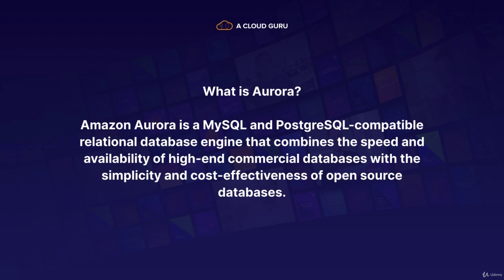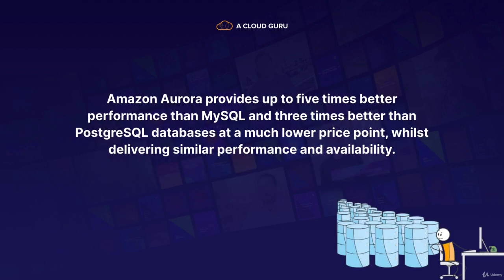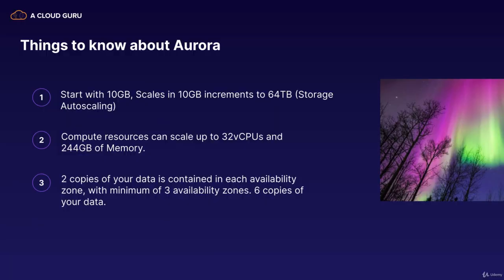Think of it as they've taken MySQL and PostgreSQL and just made it much more reliable. You get all the features of a high-end commercial database — all the features you might get with an Oracle database or a Microsoft SQL Server — but it's way more cost-effective, more like open source. Amazon Aurora provides up to five times better performance than MySQL and three times better performance than PostgreSQL databases at a much lower price point while delivering similar performance and availability.